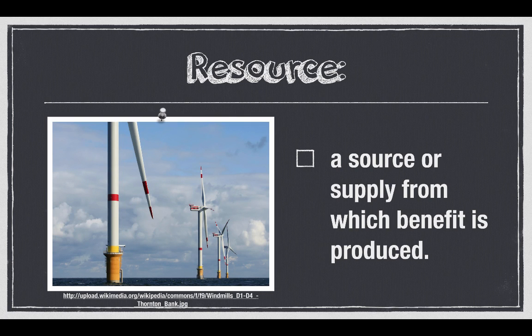So when we talk about something like solar power or wind power, we're harnessing through a windmill the wind power over a body of water. The resource is the wind. As it spins those turbines, it produces power from which we are gaining a benefit. So we're harnessing the wind — that's how a resource works.